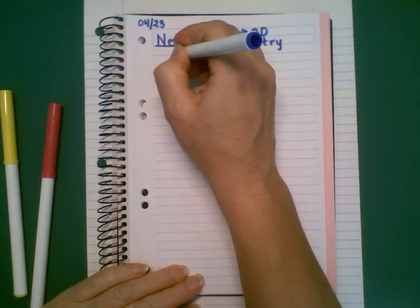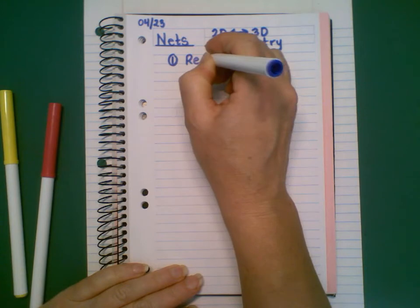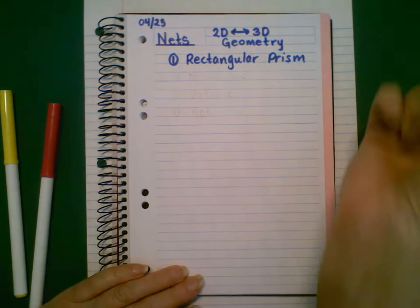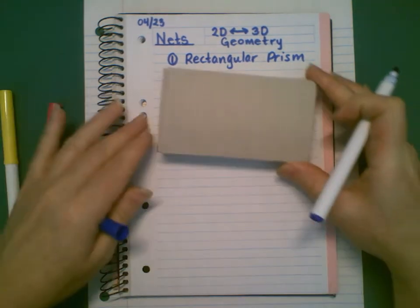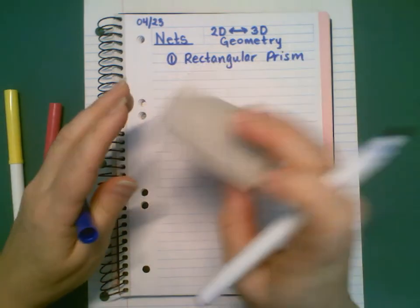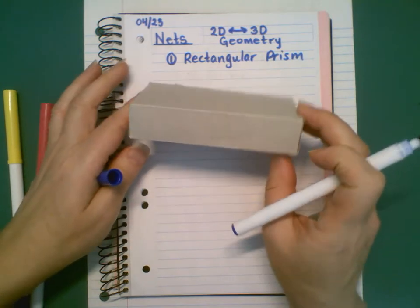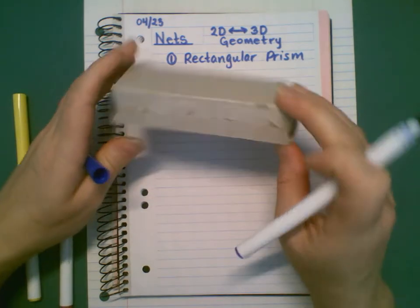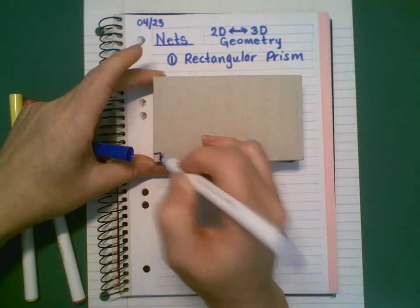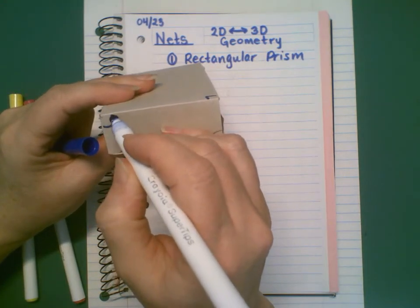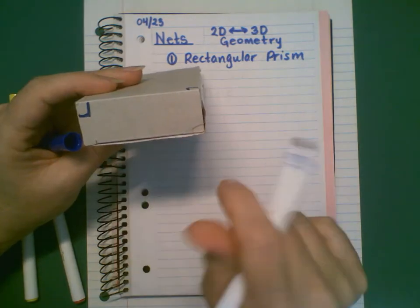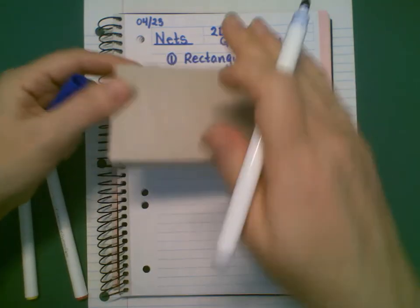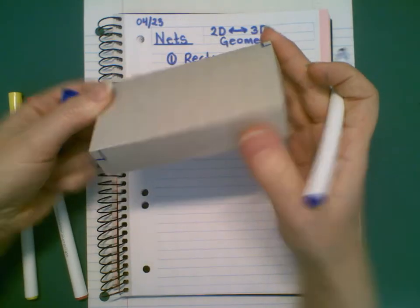We are going to be looking at an example of a rectangular prism. This is a rectangular prism. The features are that all the sides of this three-dimensional object are rectangles and all of the angles of intersections are 90 degrees. So we've got a 90 degree angle in each of the four corners here, 90 degree angles in each of the four sides. Anywhere a side meets another side is going to make a 90 degree angle.